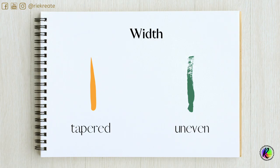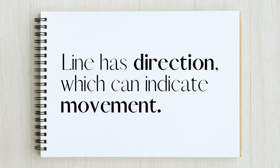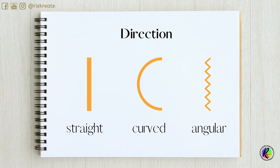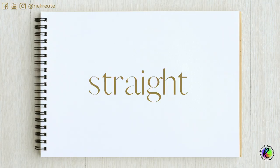A line can be tapered, whereby it becomes smaller or thinner towards one end, or uneven. Line has direction, which can indicate movement. Lines can be straight, curved, and angular.